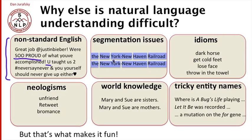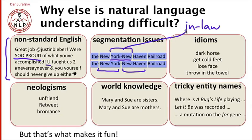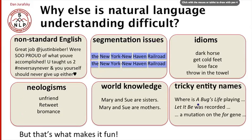We'll have a lot of segmentation problems. For example, if we see the string 'York-New' as part of 'New York, New Haven,' how do we know the correct segmentation is 'New York' and 'New Haven' (as in the New York, New Haven Railroad), and not something else like 'York-new'? We have to solve the segmentation problem correctly. We also have problems with idioms, with new words not seen before, and with entity names like the movie 'A Bug's Life,' which contains ordinary English words, making it hard to know where the name starts and ends. This comes up often in biology, where genes and proteins are named with English words.